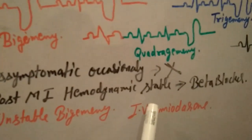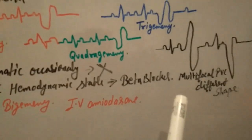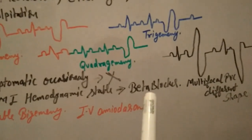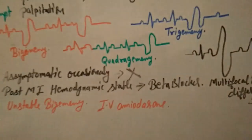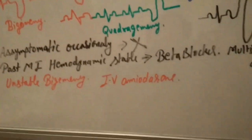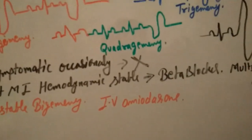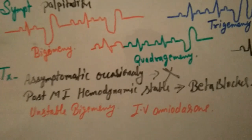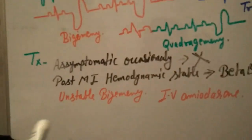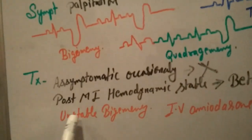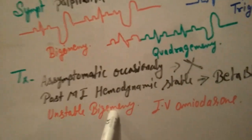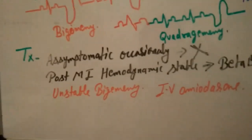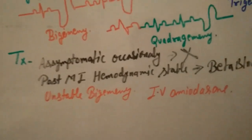If the patient is post-MI — meaning they have already had a myocardial infarction episode — but are hemodynamically stable, we need to give a beta blocker such as propranolol IV infusion, as used in the USA.